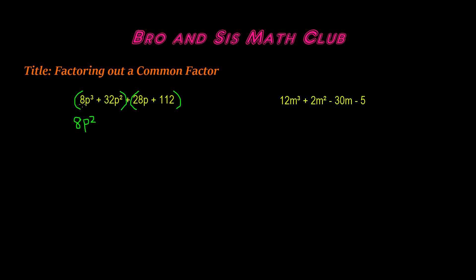The GCF of 8p cubed and 32p squared is 8p squared, because the GCF of 8 and 32 is 8, and the GCF of p cubed and p squared is p squared. When you divide, you're left with p plus 4, because 8p cubed divided by 8p squared is p, and 32p squared divided by 8p squared is positive 4.